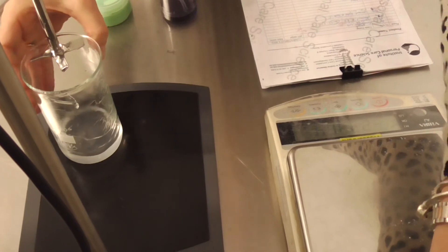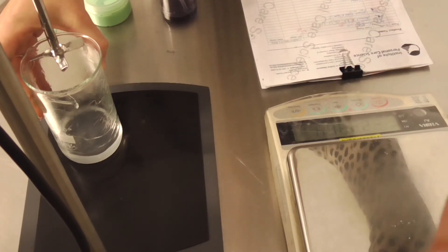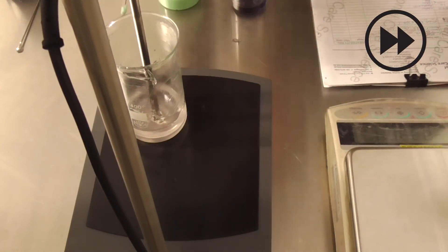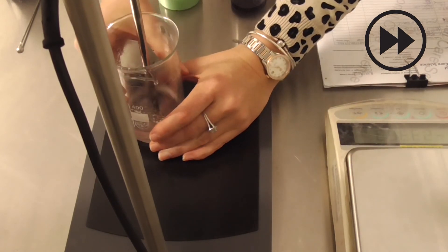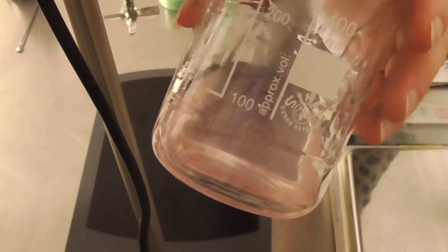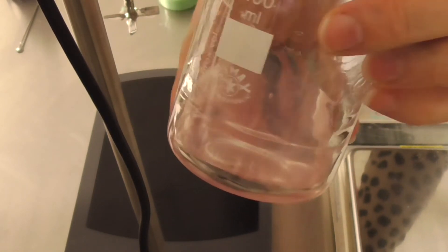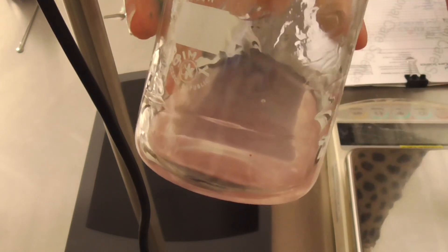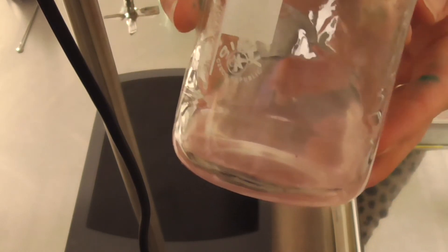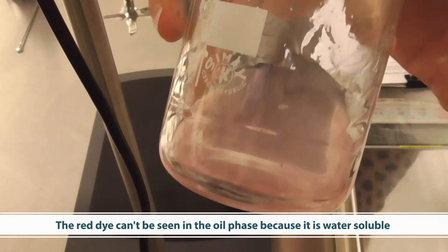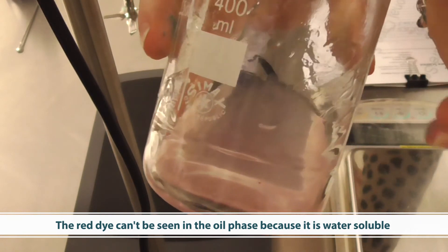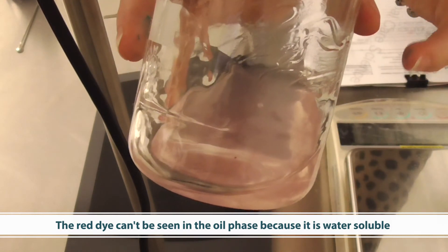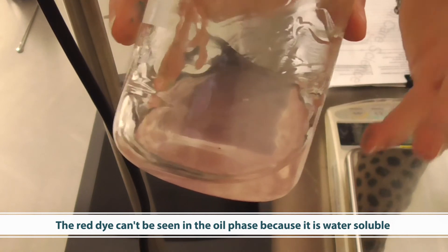The first thing I'm going to do is add some water soluble red. Now you can't really see this red. You can see a slight pink tinge but the reason why you can't see much color from this red, and this would normally give a really strong red to a formula, is because it's water soluble. But this is an oil mixture which means the red dye is very finely dispersed throughout the oil phase. You can't actually see it properly for its true color because it's in oil.